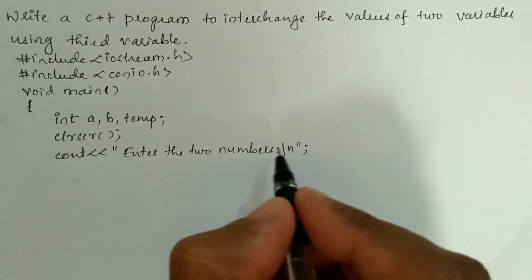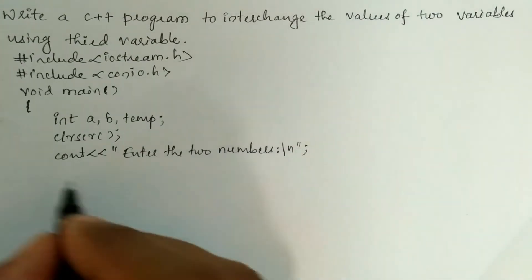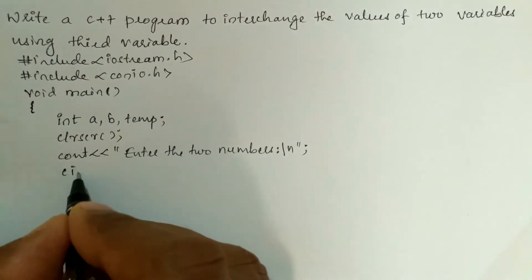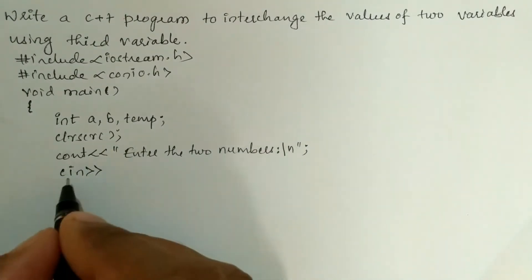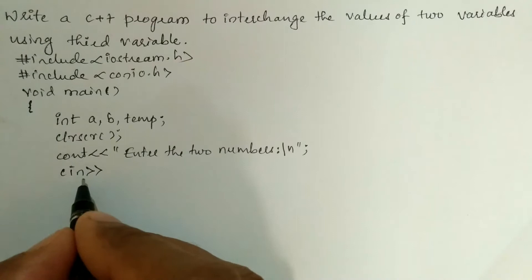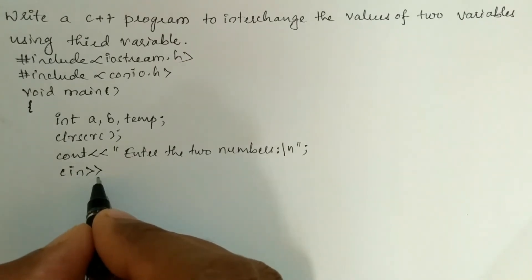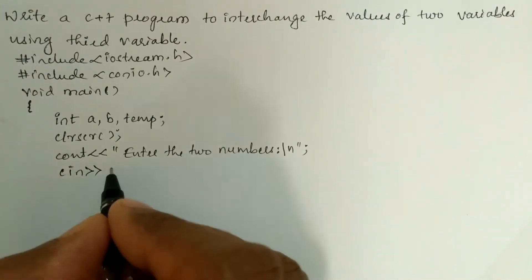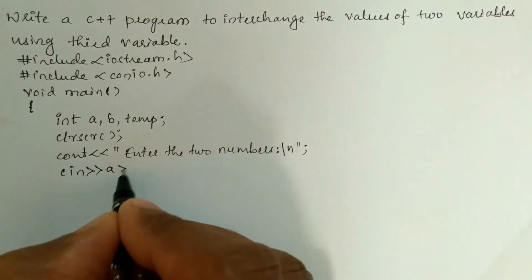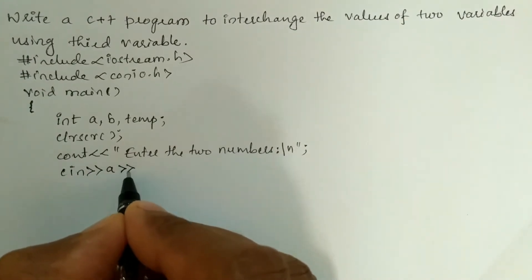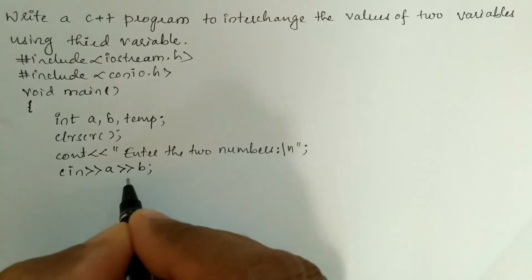We write a backslash n and put a semicolon — this backslash n will bring the cursor down to the next line. To receive input from the user through the keyboard, we use the cin object with the stream extraction operator, then variable a, then the stream extraction operator again, then variable b, and put a semicolon.